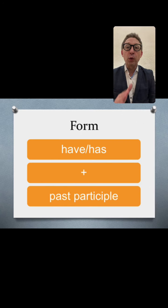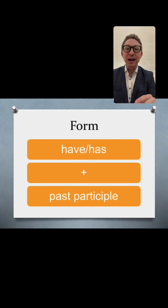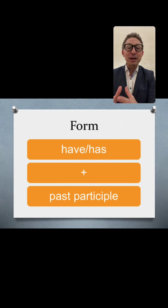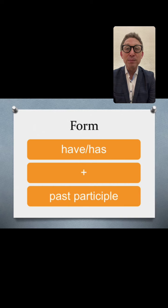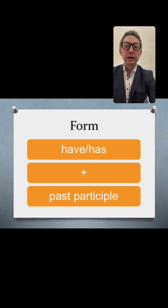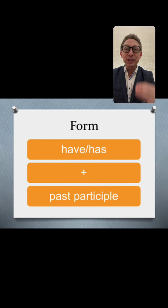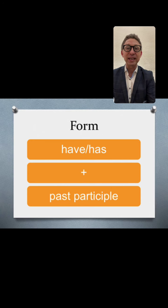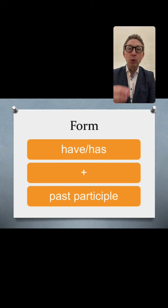Let's look at the form first. Very straightforward: have or has plus the past participle. Past participles are either simple because they're regular verbs, or irregular, which means you have to memorize them — there's no way around it. You learn them by using them. That's the fastest way: use them in active communication, either speaking or writing. The more you use them, the quicker you'll remember them.